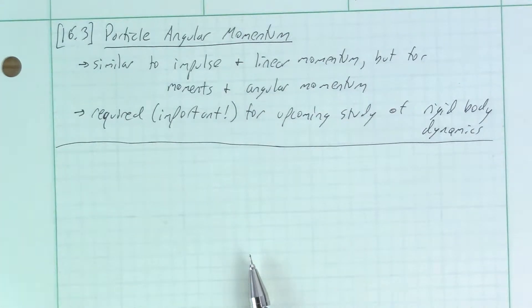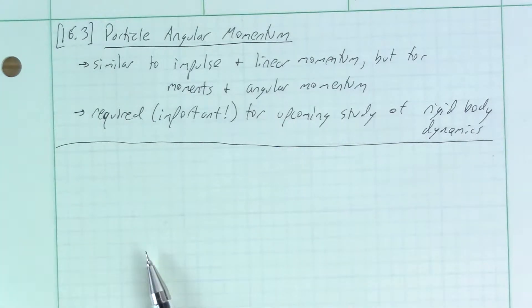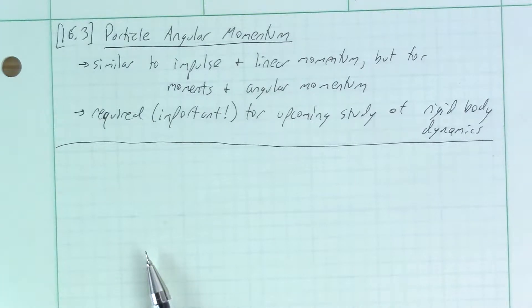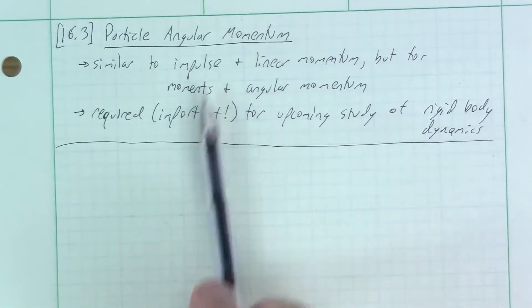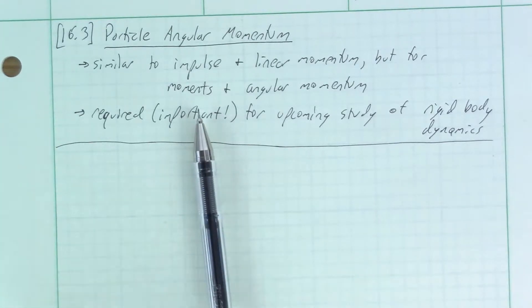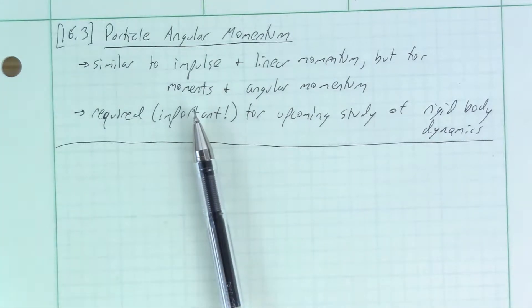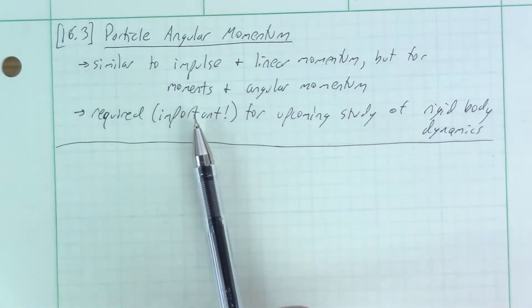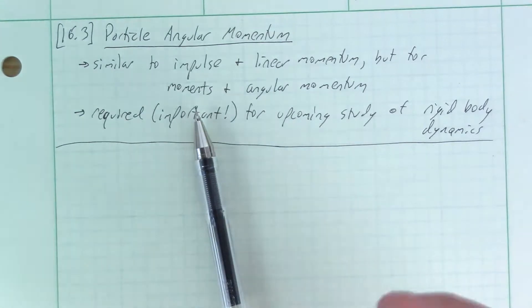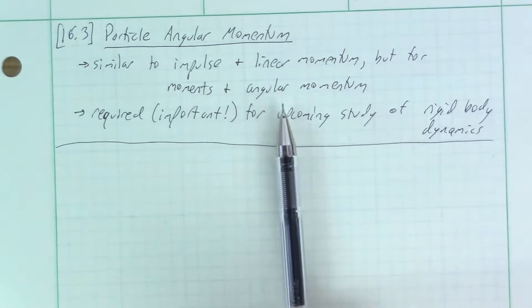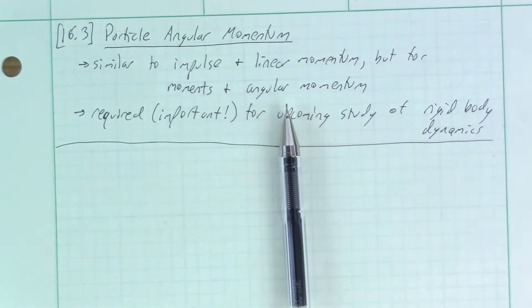In this lecture, the last lecture of chapter 16, we'll be talking about angular momentum of particles. It's really an extension of our impulse and linear momentum discussion previously, but applied for moments and angular momentum. So impulse was force over time — this is going to be like a moment over time, a torque, the rotational version of a force, and the associated angular momentum.